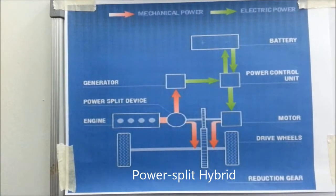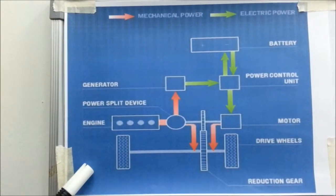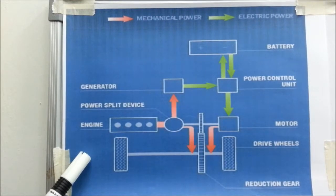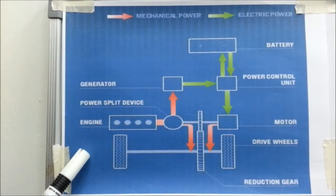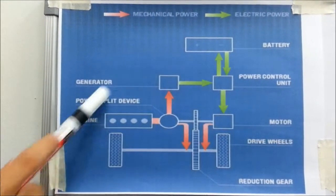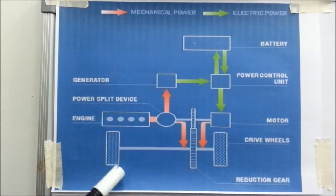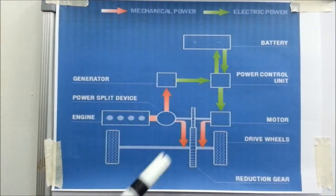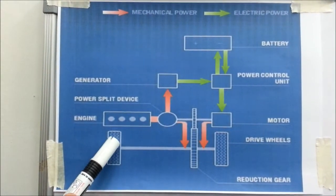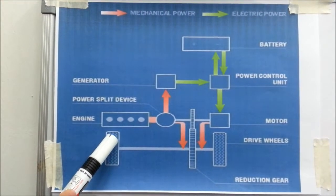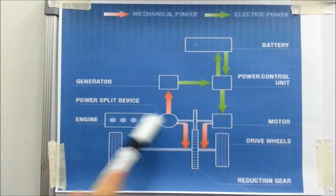Power split hybrid system is the combination of series and parallel hybrid systems. It is possible to drive the wheel using the dual source which is electric motor or the engine, as well as to generate electricity while running on the electric motor. The system runs the car on power from the electric motor only or by using both engine and motor.